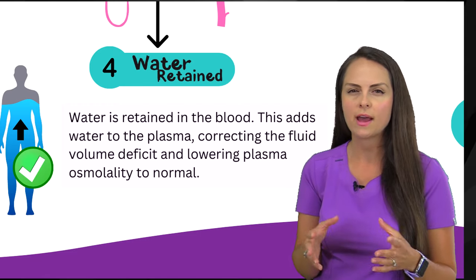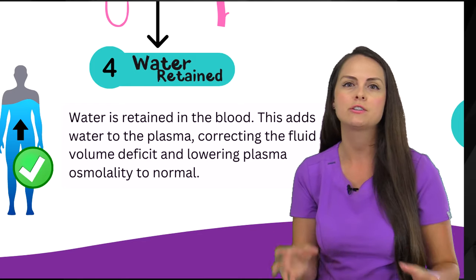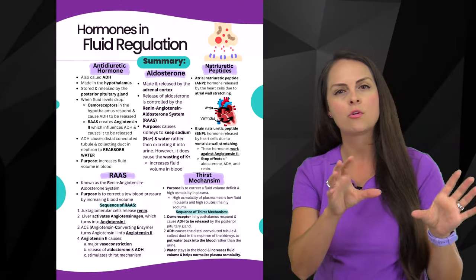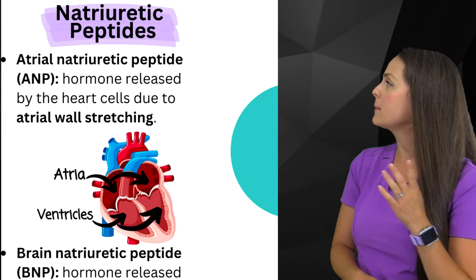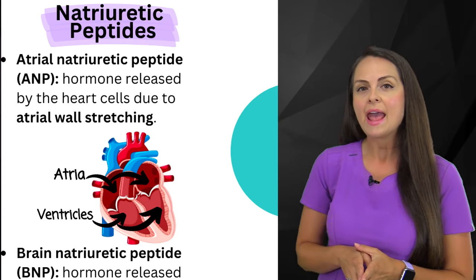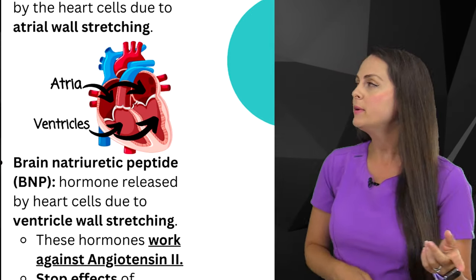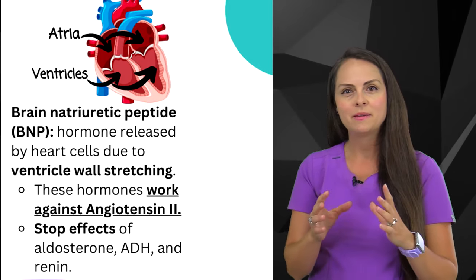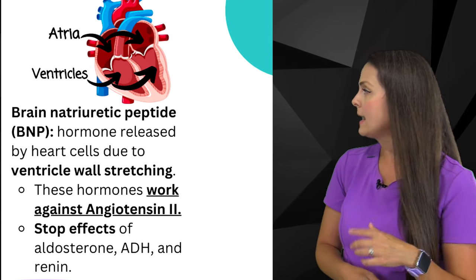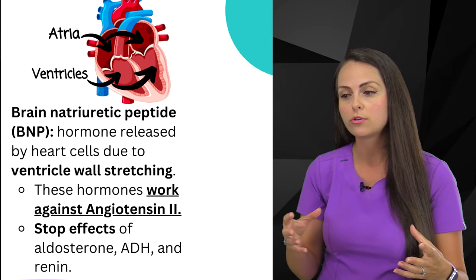We've reviewed hormones and systems that correct fluid volume deficit, but how do we prevent those systems from adding way too much fluid and pushing us into fluid volume overload? We have a group of hormones that keep those systems in check — the natriuretic peptide hormones. One is atrial natriuretic peptide, or ANP, secreted by heart cells when there's stretching of the atrial wall — the top chambers of the heart. We also have BNP, brain natriuretic peptide, released by heart cells when there's significant ventricle wall stretching.